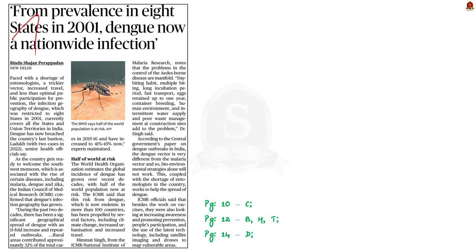This news article talks about dengue. According to the World Health Organization, the incidence of dengue has grown over recent decades. Currently, half of the world population is at risk. In India, in 2001, the infection geography of dengue was restricted only to 8 states, but currently it covers almost all states and union territories. According to ICMR, the risk from dengue has been propelled by several factors, including climate change, increased urbanization, and increased travel.